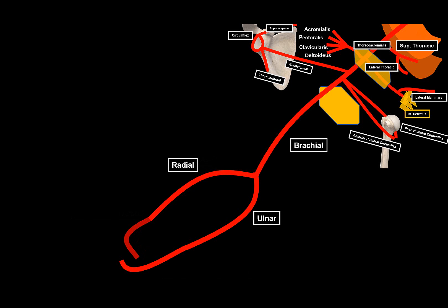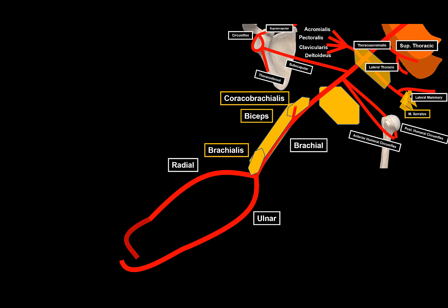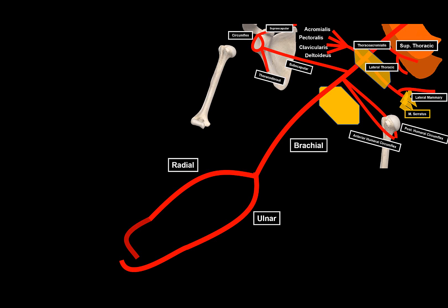Moving to the brachial artery, it lies in the medial bicipital groove between the biceps and triceps on the medial side. This is the artery typically auscultated when measuring blood pressure. As it descends, it supplies the anterior compartment muscles — the coracobrachialis, biceps, and brachialis. Its notable side branch is the deep brachial artery, or profunda brachii, which travels behind the humerus in the sulcus nervi radialis, supplying the entire posterior compartment including the triceps and the bone itself.